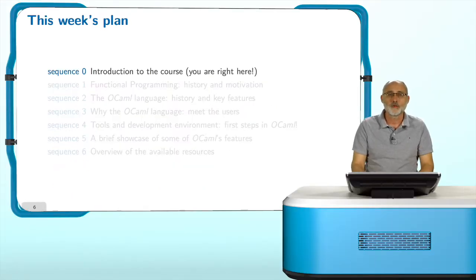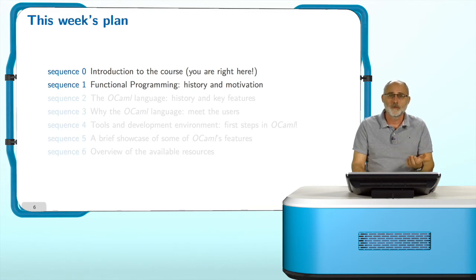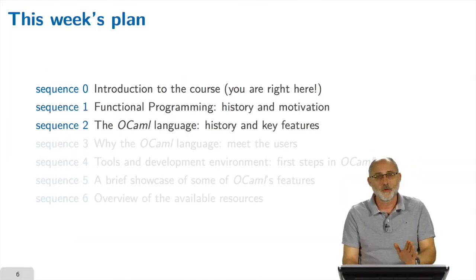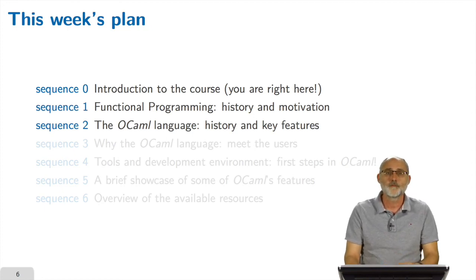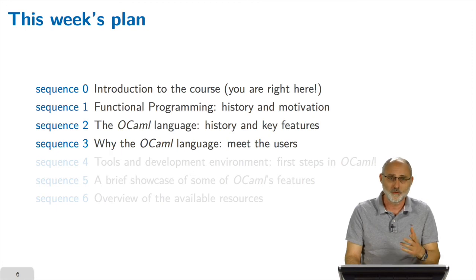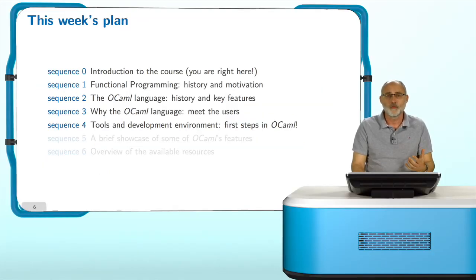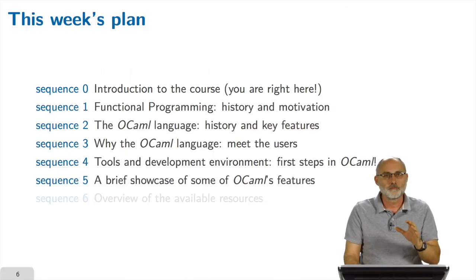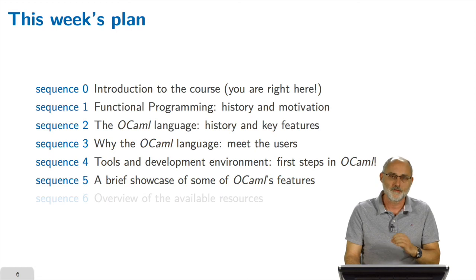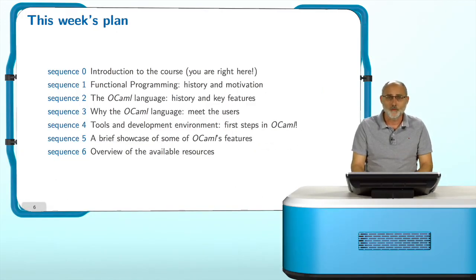This week is organized in a few sequences. The first one is an introduction to the course — we are right here. Then we will provide some background on functional programming in general, some history and motivation. In sequence two, we move to the OCaml language, learning where it comes from and what its key features are. In sequence three, you will meet some of the industrial and research users and see what they have to say about this fantastic system. In sequence four, we will provide an overview of the tools and development environment, and you will take your first steps in the OCaml programming system. Then we will provide a brief showcase of some of OCaml's advanced features. The final sequence will give you a short overview of the available resources.